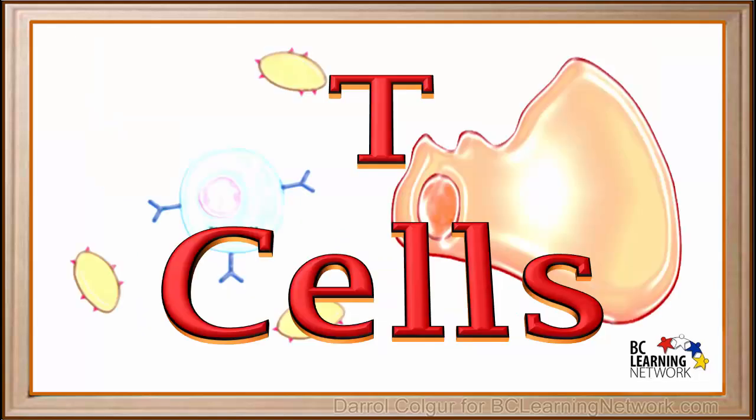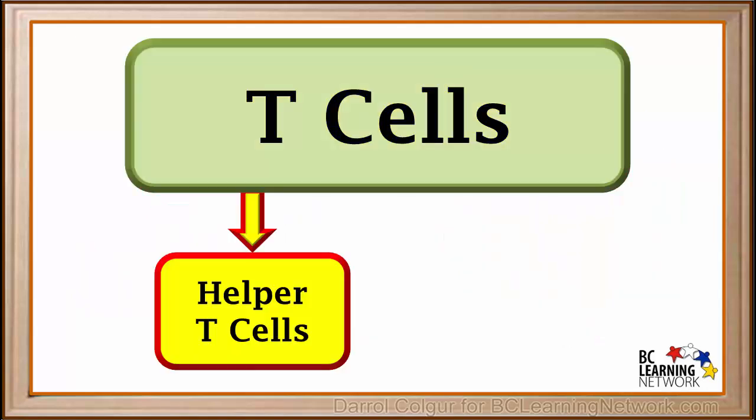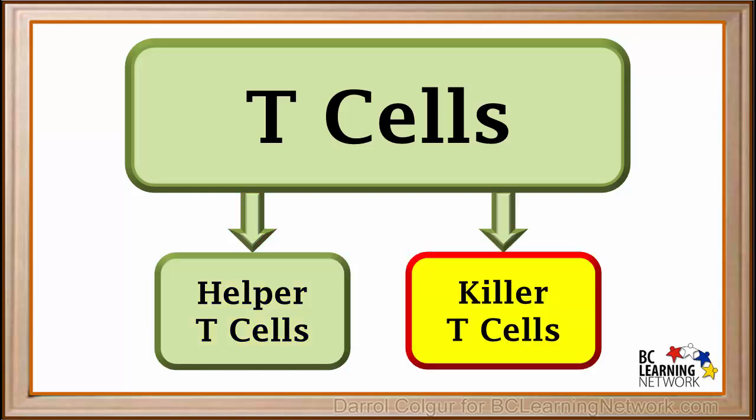Here we'll introduce you to T cells and what they do. Our body has two main types of T cells: helper T cells and killer T cells. We'll have a look at each of these types and how they work.